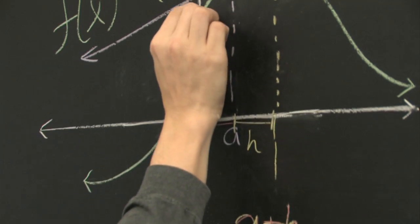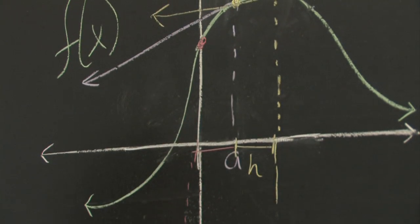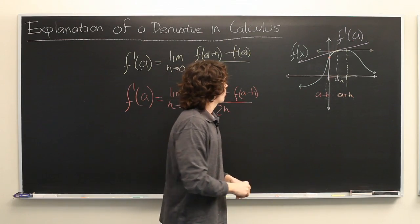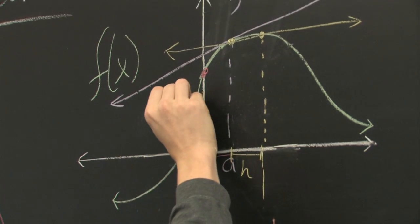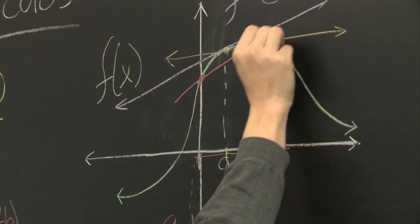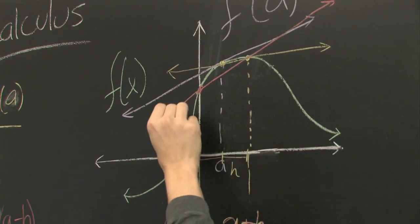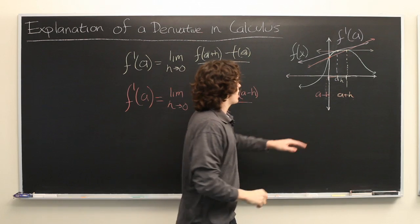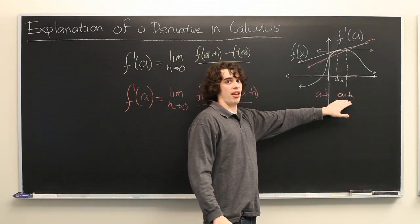And then right here, we have f of a minus h. Then what we're looking at is this secant line, which connects f of a minus h to f of a plus h.